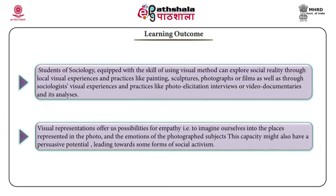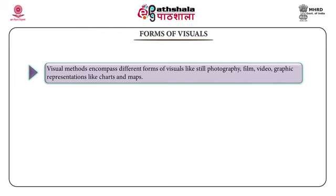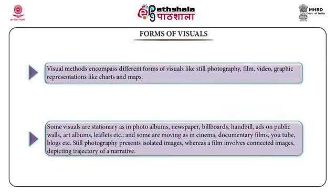Visual representations offer possibilities for empathy — that is, to imagine ourselves into the places represented in a photo and the emotions of the photographed subjects. This capacity might also have a persuasive potential leading towards social activism. Visual methods encompass different forms: still photography, film, video, graphic representations like charts and maps. Some visuals are stationary — photo albums, newspapers, billboards, handbill ads — and some are moving, as in cinema, documentary films, YouTube, blogs, etc.